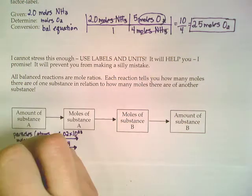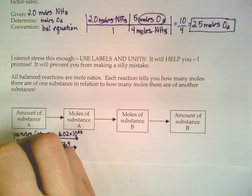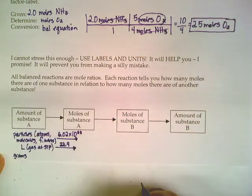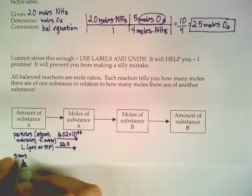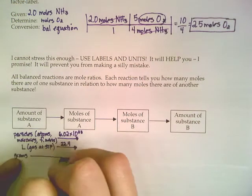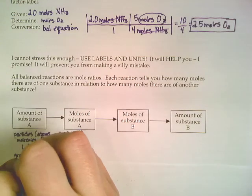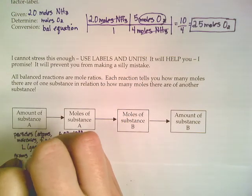What if they gave you the amount of your substance of chemical A in grams? Well, in order to get from grams to moles, the way you do that is by using the molar mass on the periodic table.